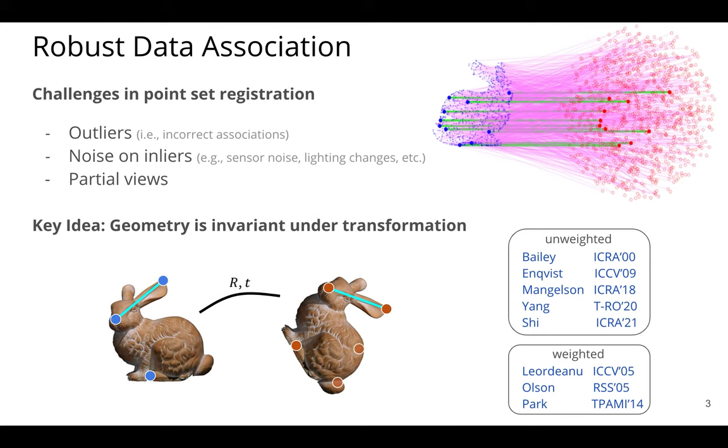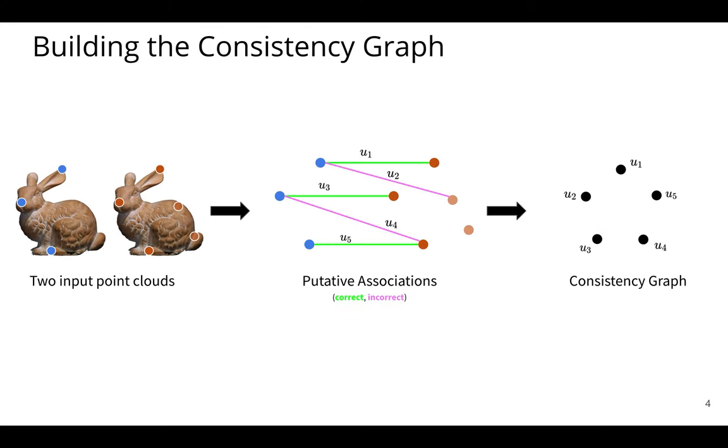But for now, the important thing is that all these works leverage this idea to build up some sort of graph where each edge in this graph encodes what we call association consistency. So let's dig into that a little bit more. If we're given these two point clouds red and orange and also a set of initial potential associations shown here in the middle, we can build this consistency graph.